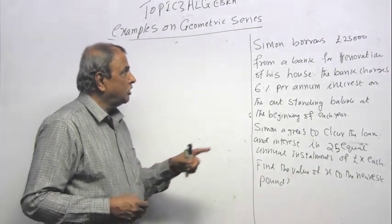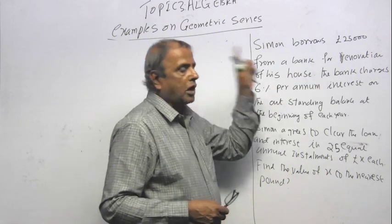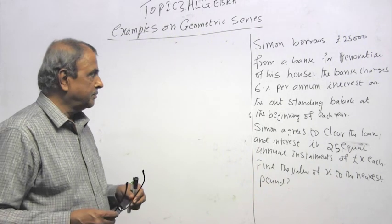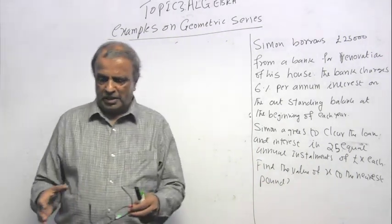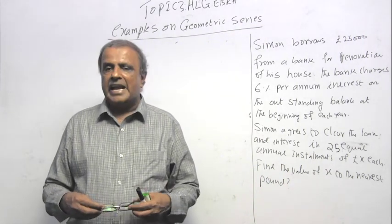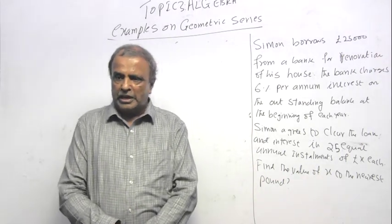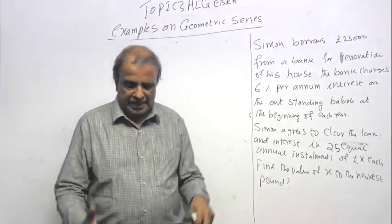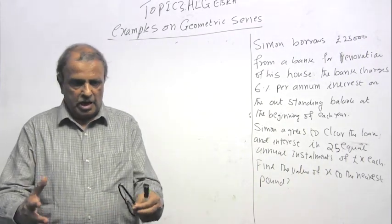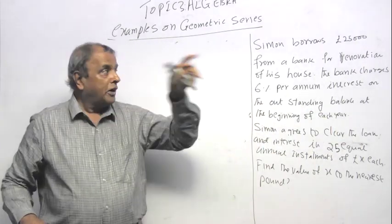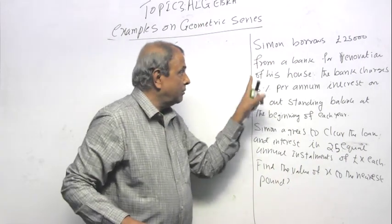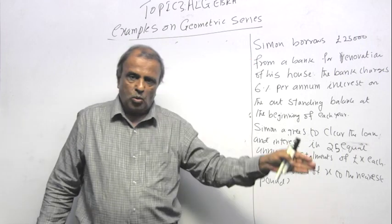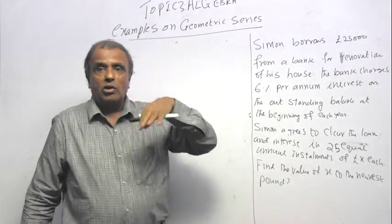Simon borrows £25,000 from a bank for renovation of his house. The bank charges 6% interest per annum on the outstanding balance at the end of each year. Let's say on 1st January 2019, you borrow £25,000. On 1st January 2020, you will owe them £25,000 plus 6% of interest on £25,000. But let's say on 1st January 2020, you want to pay back £2000. Then from £25,000, you owe them 25 times 1.06. From 2020 to 2021, they will charge you 6% on whatever was that balance.